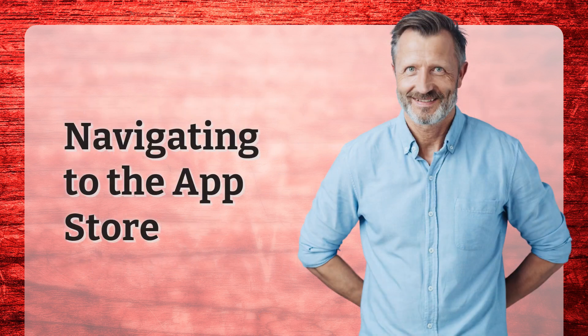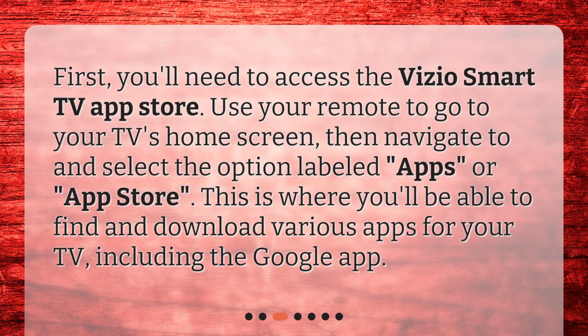Navigating to the App Store. First, you'll need to access the Vizio Smart TV App Store. Use your remote to go to your TV's home screen, then navigate to and select the option labeled Apps or App Store. This is where you'll be able to find and download various apps for your TV, including the Google app.